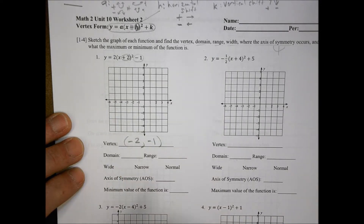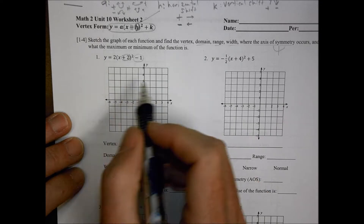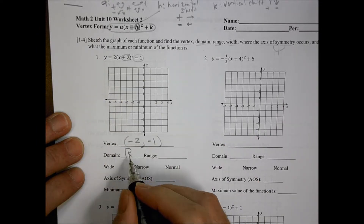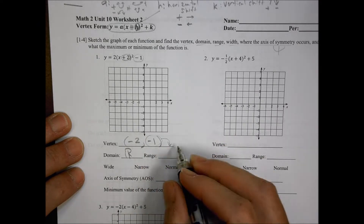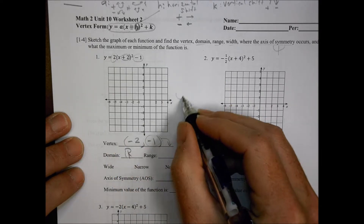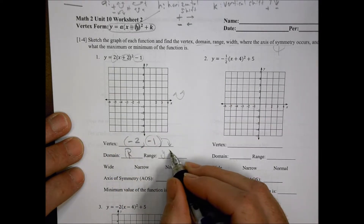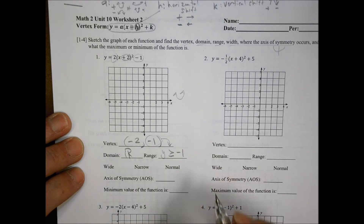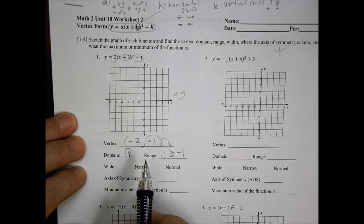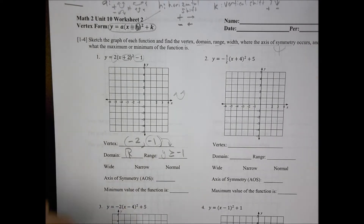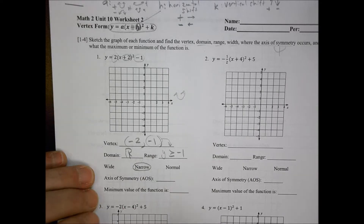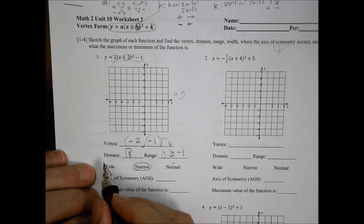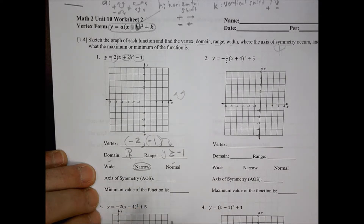It's nice when it's in vertex form — you can tell right away. The domain, because it's a regular-looking quadratic, is going to be all values of x. For the range, we look at the vertex: because the 'a' is positive, we know we're curving up, so y is greater than or equal to negative one. I have a whole number — two — so because it's a whole number, not a fraction, this is going to be narrow.